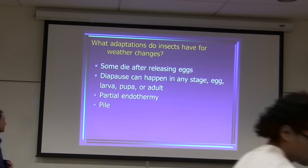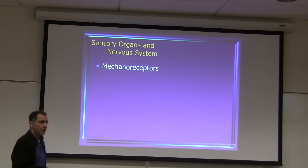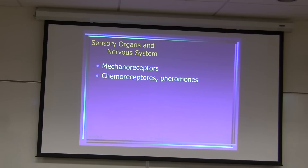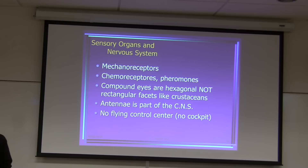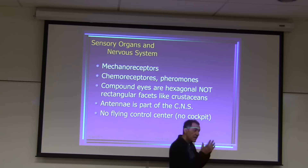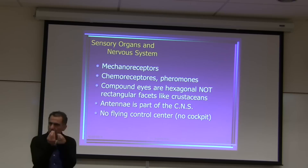Sensory organs include mechanoreceptors (touch), chemoreceptors, thermal receptors, and olfactory receptors for smell. Compound eyes have hexagonal facets like crustaceans. Antennae are part of the peripheral nervous system. Amazingly, there is no flight control center in insects — they can fly, mate, and deposit eggs mid-flight without any centralized flight control system.